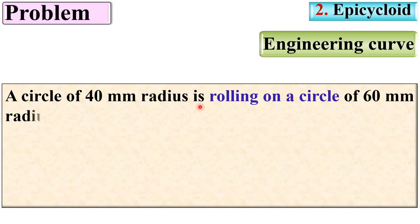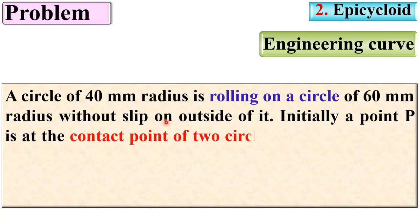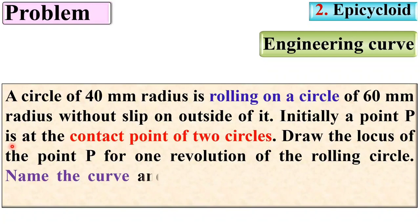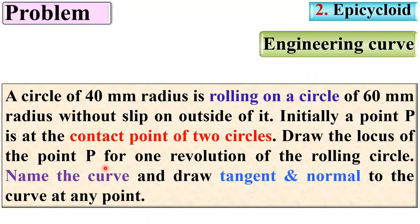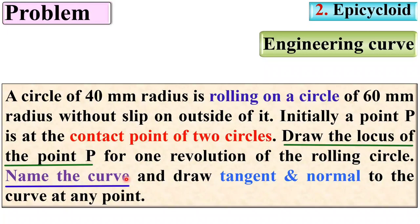Now let us see the problem description. A circle of 40 mm radius is rolling on a circle of 60 mm radius without slipping on the outside of it. Initially, a point P is at the contact point of the two circles. Draw the locus of point P for one complete revolution of the rolling circle. Name the curve and draw the tangent and normal to the curve at any point. So basically there are three different objectives: first, draw the locus of point P; second, name the curve; and third, draw the tangent and normal.